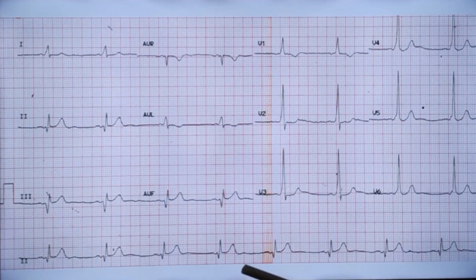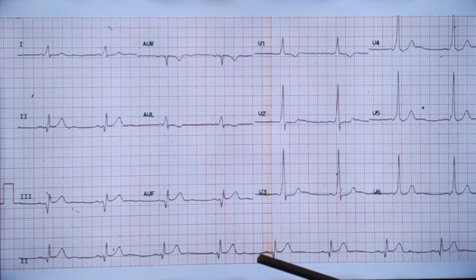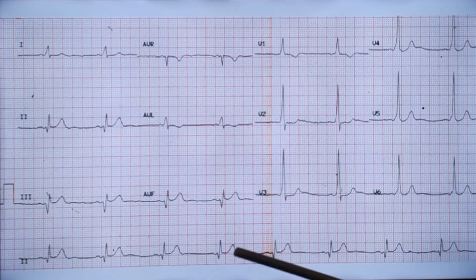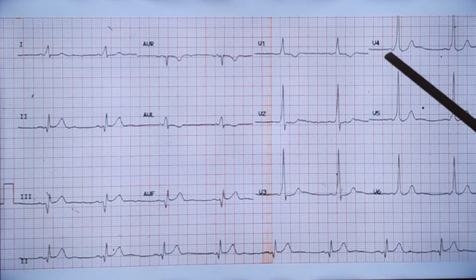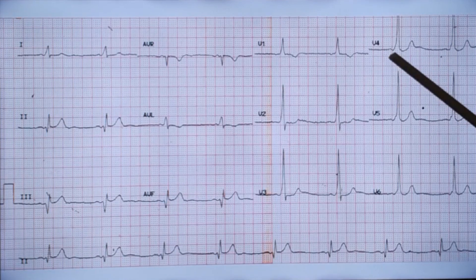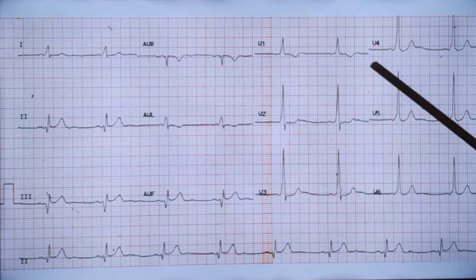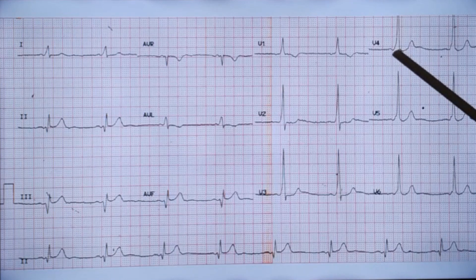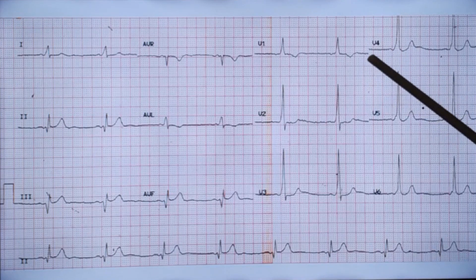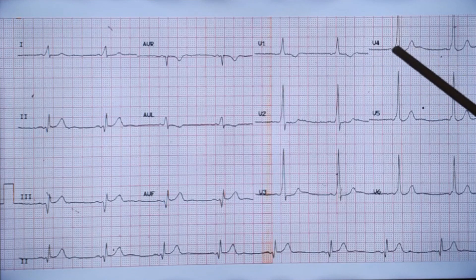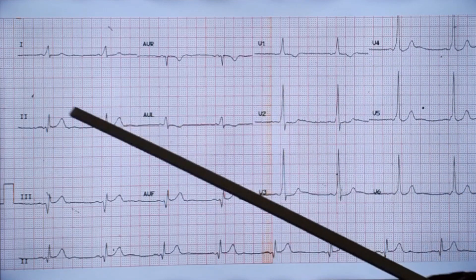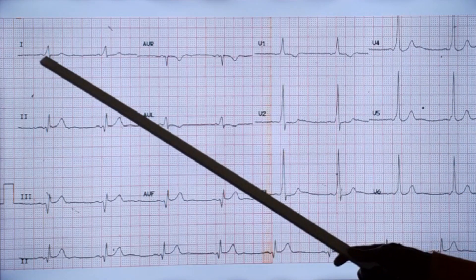This ECG shows sinus bradycardia with a rate of around 50 per minute. In addition, you can note that the PR interval is short — a short PR interval followed by a delta wave. This region is called the delta wave due to pre-excitation. The shape of this region resembles the Greek letter delta as well as a river delta, which is why it is called the delta wave. You can see the delta waves in all leads along with the short PR interval.